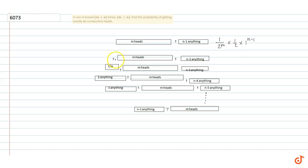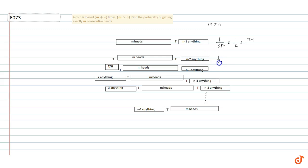The second case is: first a tail, then m heads, then a tail, then n minus 2 heads or tails. Here we see that there can be n minus 1 heads or tails in the remaining positions. Since m is greater than n, we are sure that no consecutive m heads occur here. So the probability of the second case will be: one-half times 1 over 2 to the power m, times one-half, times 1 to the power n minus 2.